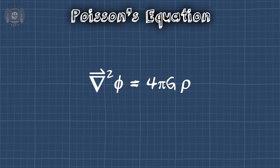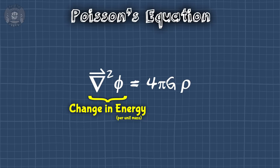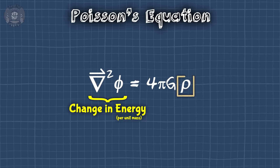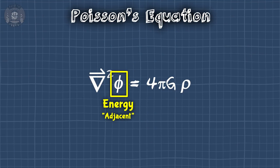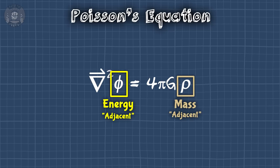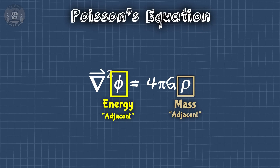Granted, it wasn't called energy back then, but that's what it was whether it was called that or not. Basically, this says a change in energy across space is caused by a mass — actually, that's energy per unit mass, or potential. Also, that's mass density rather than mass. It doesn't matter if we're only looking at this conceptually. This is energy adjacent, and this is mass adjacent. It's close enough.